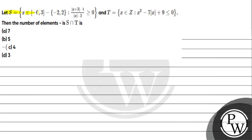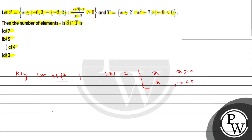Hello guys, let's see the information we can work with. Set S is defined as the closed interval minus 6 to 3, excluding minus 2 and 2, such that mod x plus 3 minus 1 upon mod x minus 2 is greater than or equal to 0. And set T is x minus 2S such that mod x squared minus 7 into mod x plus 9 is less than or equal to 0.